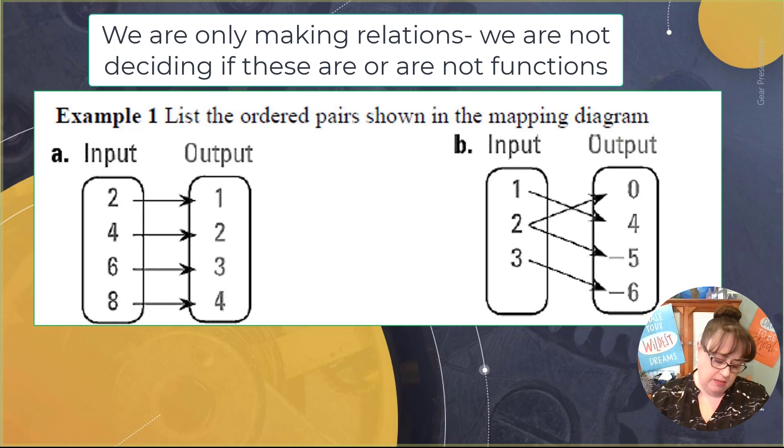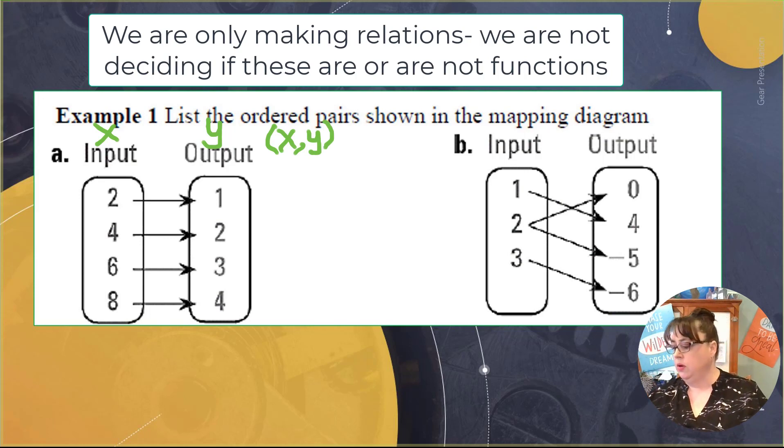When we are looking at this, we are going to say that the input is the x value and the output is the y value. And so when you're writing an ordered pair, remember that it goes x comma y. And so we are going to write our ordered pairs in that way. It's just a matter of putting them into the parentheses.